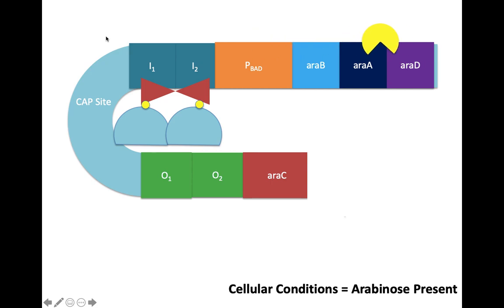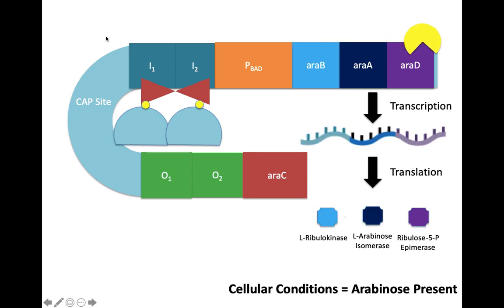In this way, the arabinose operon is induced and the structural genes will create an RNA transcript encoding the three enzymes that allow the cell to break down L-arabinose for energy.